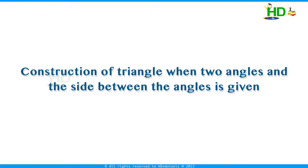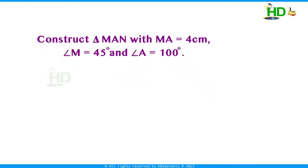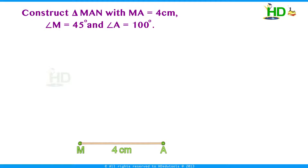Construction of a triangle when two angles and the side between the angles are given. We take this example: construct triangle MAN with MA = 4 cm, angle M = 45 degrees, and angle A = 100 degrees. This is the rough sketch of the triangle with the given measurements. For this, first draw a line segment MA of length 4 cm.